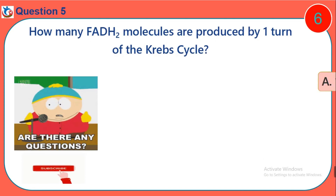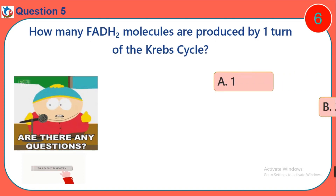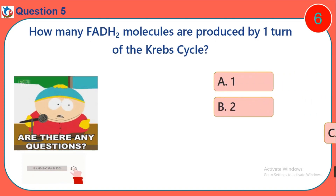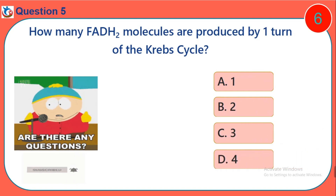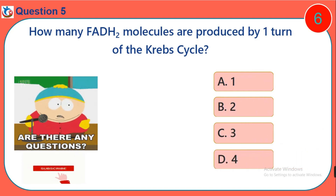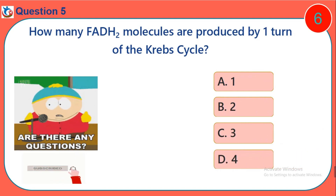Question 5. How many FADH2 molecules are produced by one turn of the Krebs cycle? A. 1. B. 2. C. 3. D. 4.